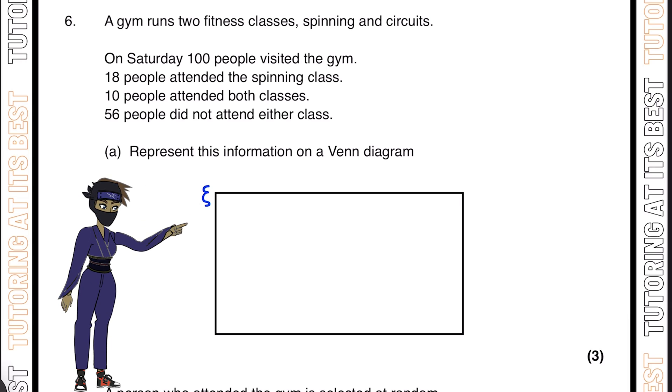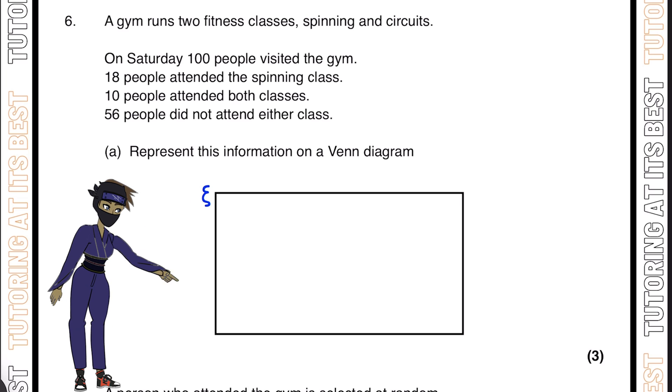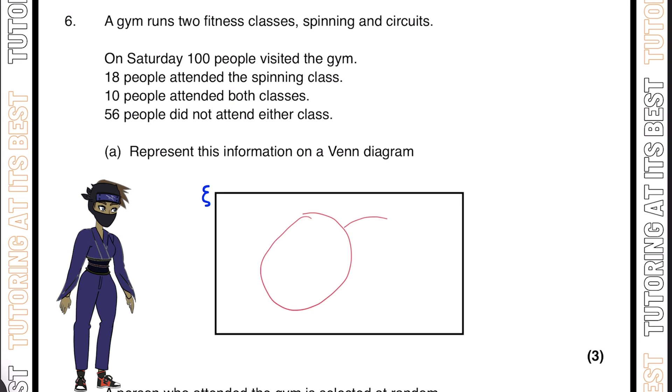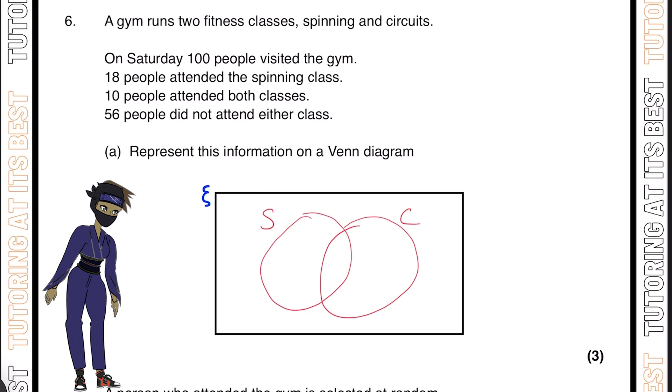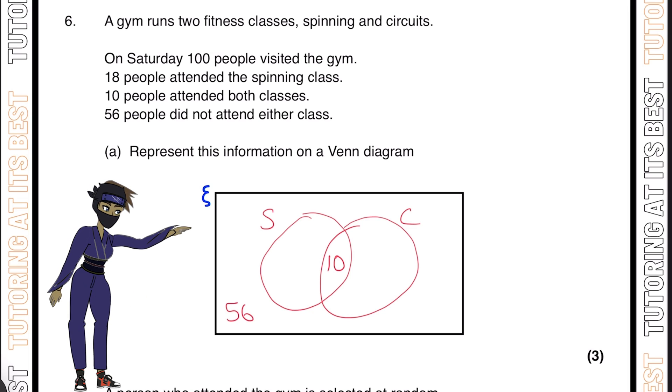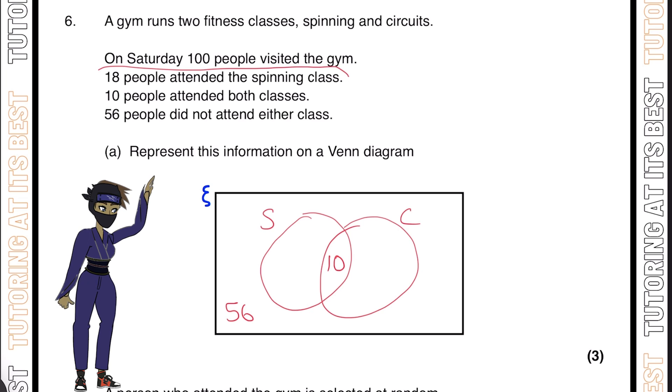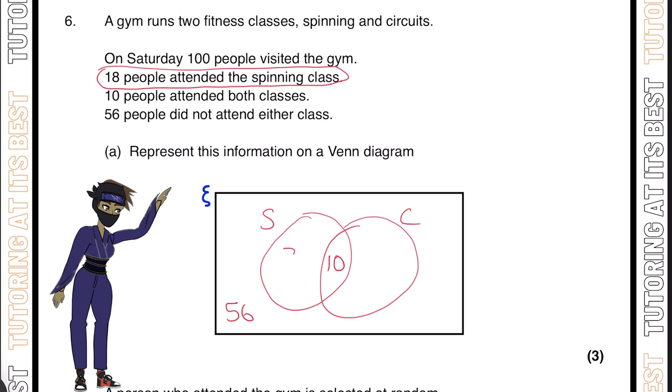Question 6: A gym runs two fitness classes, spinning and circuits. We'll draw our Venn diagram here, S for spinning and C for circuits. On Saturday, 100 people visited the gym, 18 people attended the spinning class, 10 attended both classes, and 56 didn't attend at all. Now let's come back to 18. 18 attended the spinning class, but we've already got 10 in there, so we'll just have 8, because 18 minus 10 gives us 8.